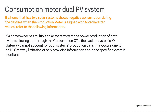Before troubleshooting, make sure that both PV systems have metering capability. Next, you'll need to verify whether the system's production is being measured through the consumption CTs of one or both IQ gateways. A single IQ gateway cannot account for both systems' production data, since it only reports data from the specific system it monitors.